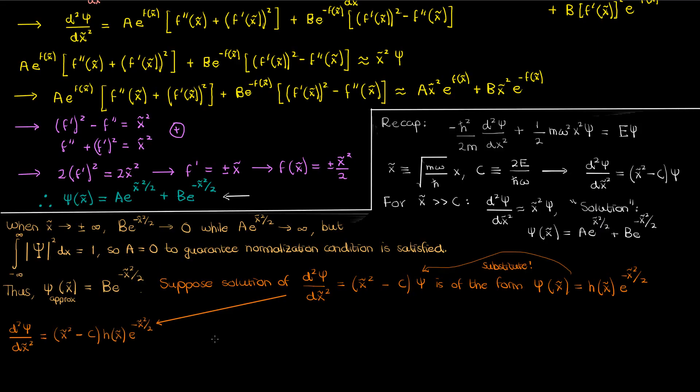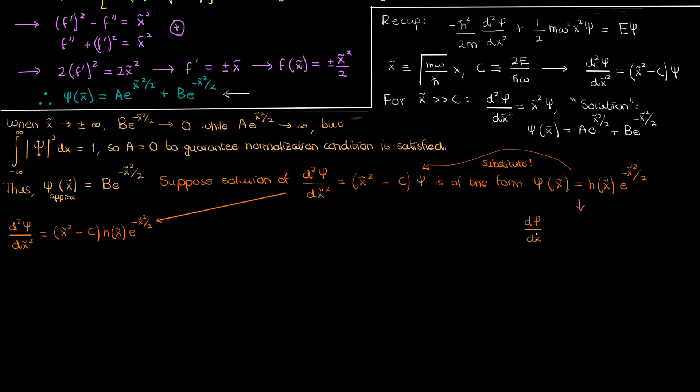We'll also need to express the left-hand side in terms of h. To do that we'll take the expression for ψ in terms of h and differentiate it once to get ψ prime using the product rule. Then we'll differentiate ψ prime once more with respect to x tilde to get the second derivative, again using both the product rule and the chain rule.